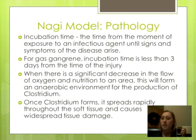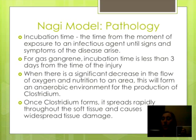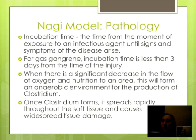The NAJI model can be broken down into four areas. Pathology is what happens at the cellular level. Incubation time is the time from the moment of exposure to an infectious agent until signs and symptoms of the disease appear. For gas gangrene, incubation time is less than three days from the time of injury. When there is a significant decrease in the flow of oxygen and nutrition to an area, this will form an anaerobic environment for the production of clostridium. Once clostridium forms, it spreads rapidly throughout the soft tissue and causes widespread tissue damage.